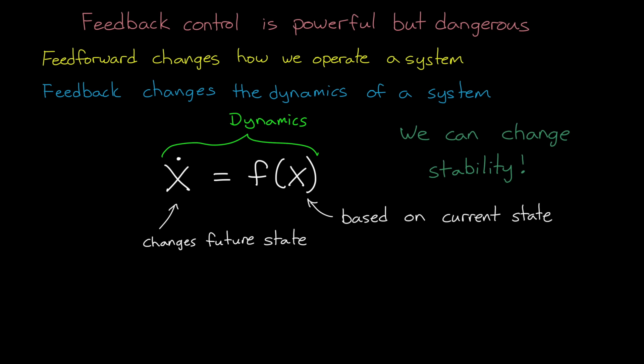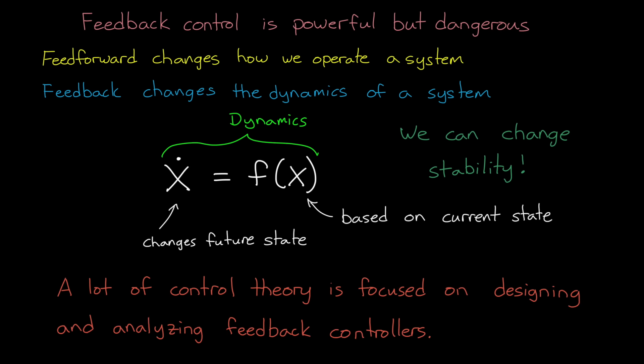And on the plus side, we can take an unstable or marginally stable system and make it more stable with feedback control. But on the negative side, we can also make a system less stable. And even unstable. And this is why a lot of control theory is focused on designing and, importantly, analyzing feedback controllers. Because if you do it wrong, you can cause more harm than good.